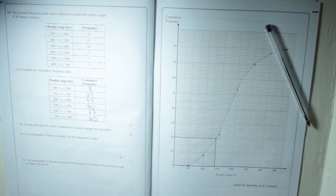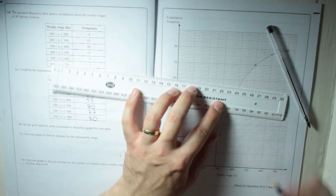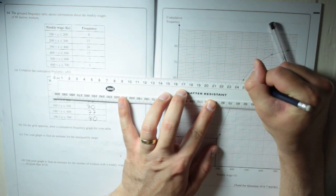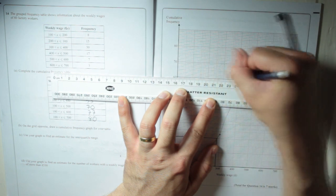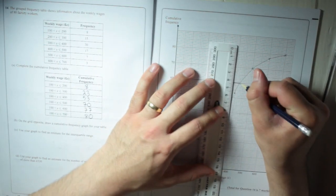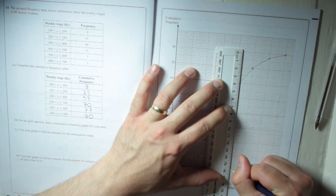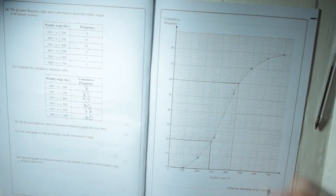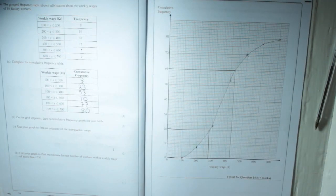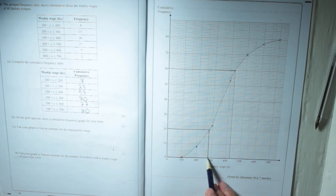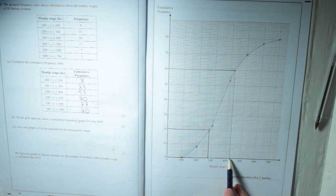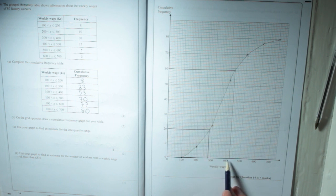Then I'm going to do the same for 60, that's three quarters of the way through the data. There's a line going from 60, hits the curve, and goes down to there. So, that means the lower quartile is here, and the upper quartile is there. So, the interquartile range is the distance between the two.